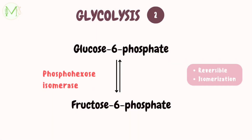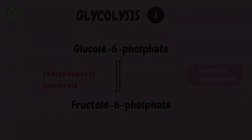In step 2, glucose-6-phosphate is isomerized to fructose-6-phosphate by an enzyme called phosphohexoisomerase, which is a reversible reaction.